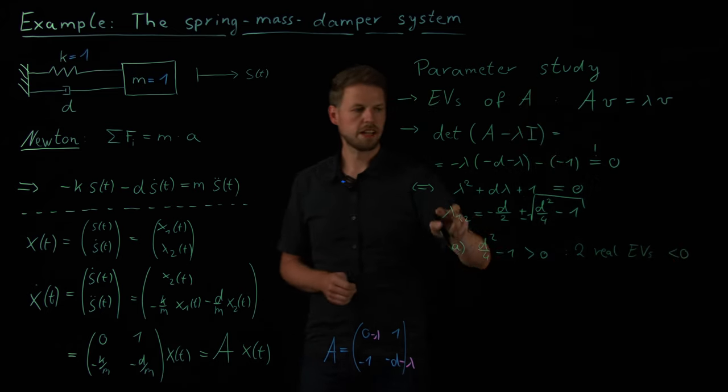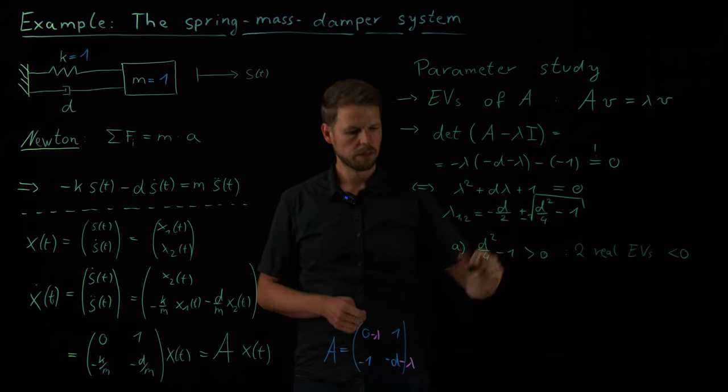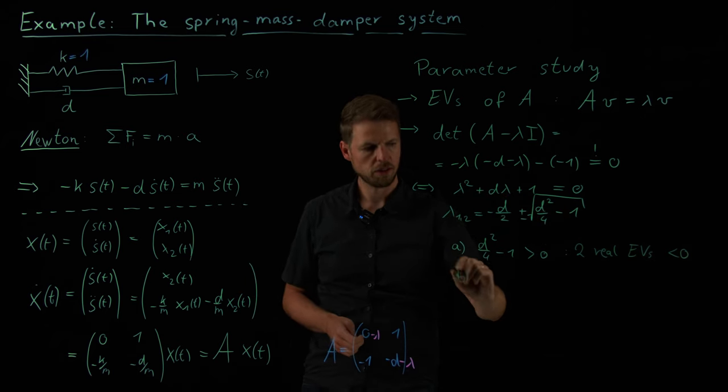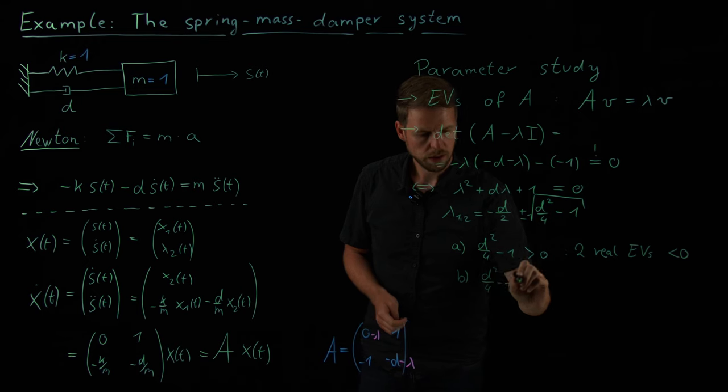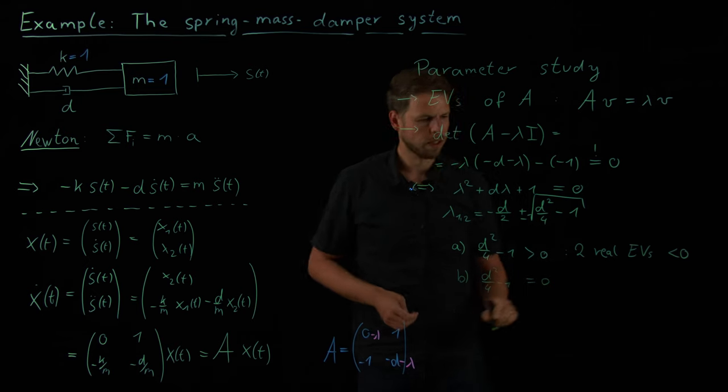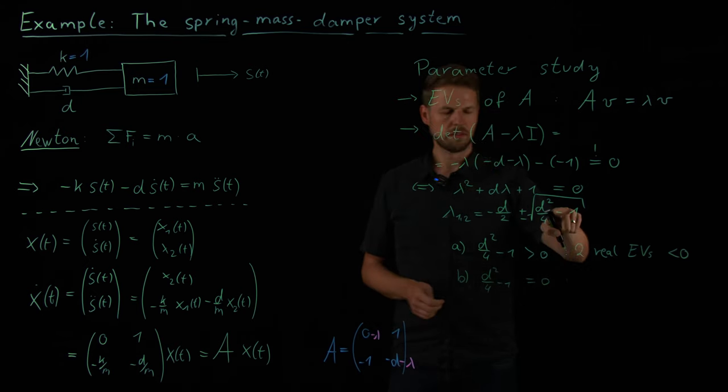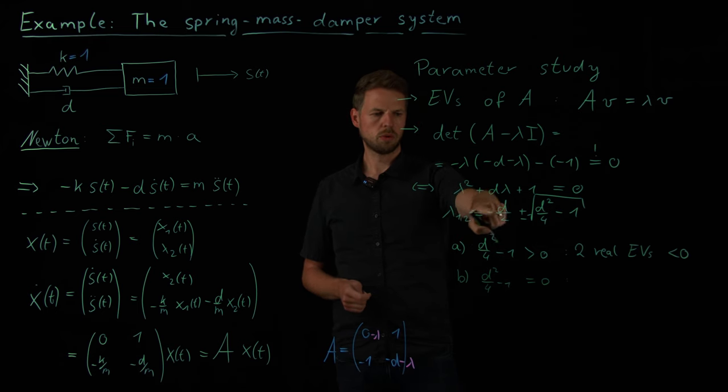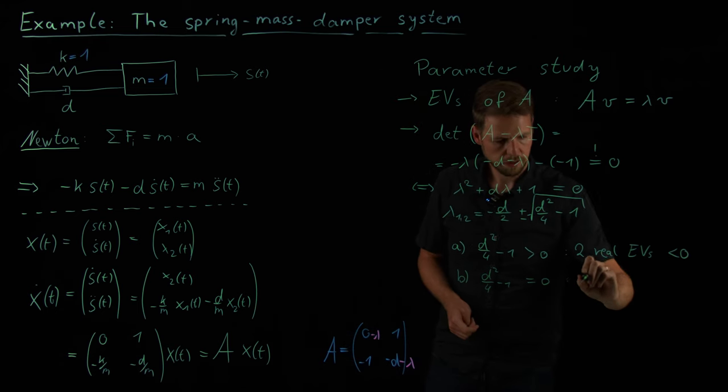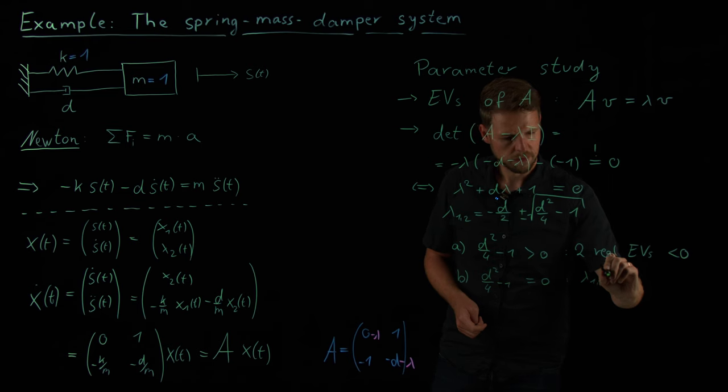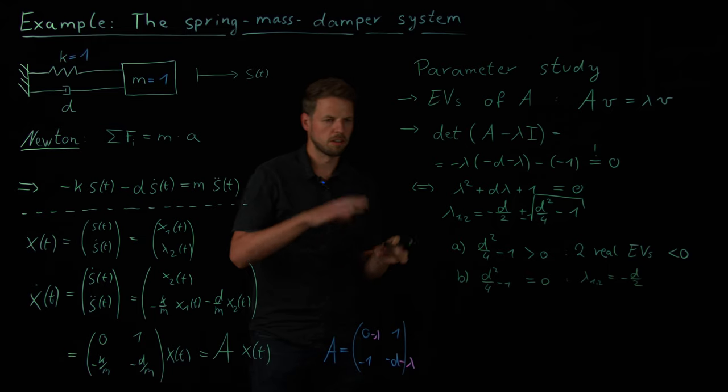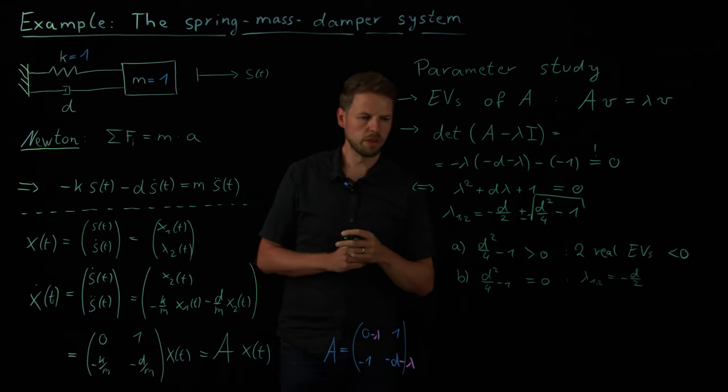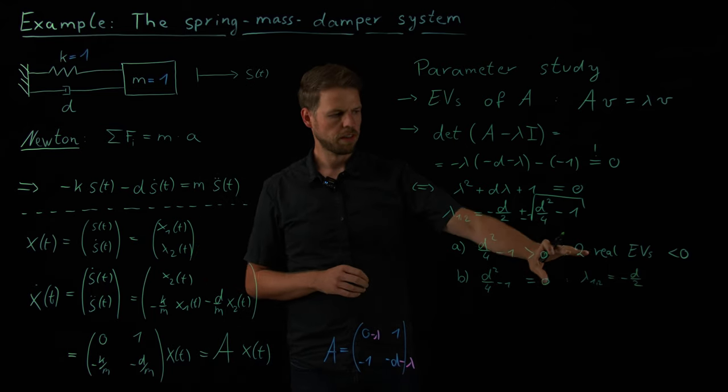We have the second case that this is exactly 0. So a very special borderline case. So we say d squared over 4 minus 1 is equal to 0. Which means we have a double eigenvalue. One lambda 1 and lambda 2 is minus d half. So duplicate eigenvalue, it's a special case, not so easy to treat, but still this can happen.